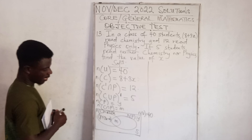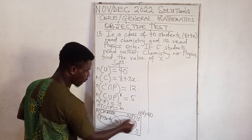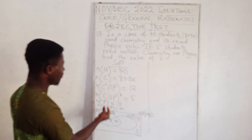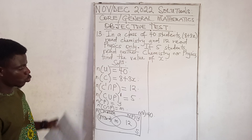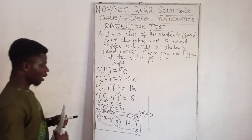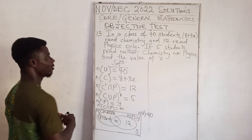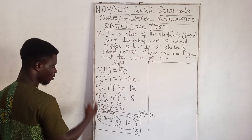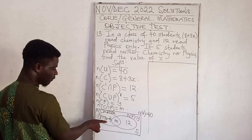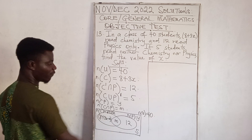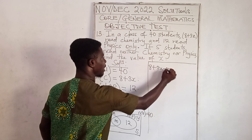Adding all regions inside the universal set must equal 40. We have: (8+3X − M) + M + (Y − M) + 5 = 40. Since Physics only is 12, Y − M = 12. The M terms cancel out, giving us 8+3X + 12 + 5 = 40.